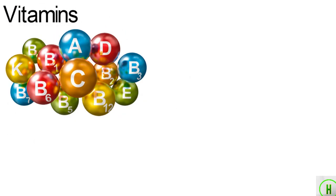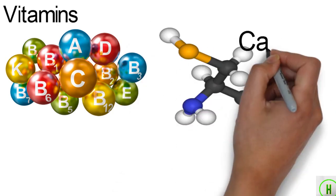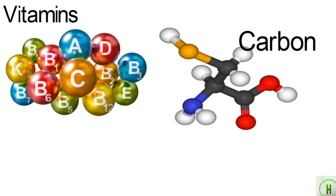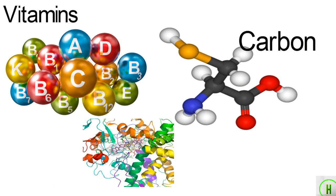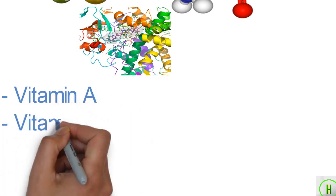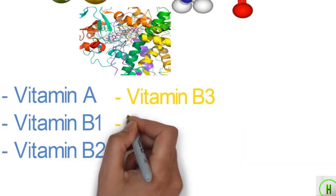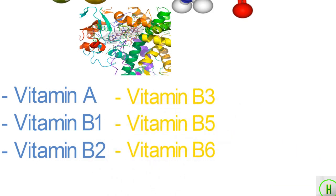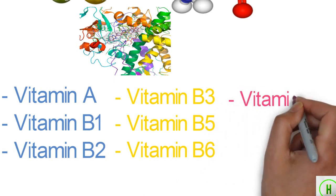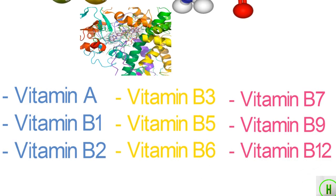Vitamins are organic compounds we require in tiny amounts. An organic compound is any molecule that contains carbon. It is called a vitamin when our bodies cannot synthesize — produce — enough or any of it, so we need to get it from our food. These include Vitamin A, Vitamin B1, Vitamin B2, Vitamin B3, Vitamin B5, Vitamin B6, Vitamin B7, Vitamin B9, and Vitamin B12.